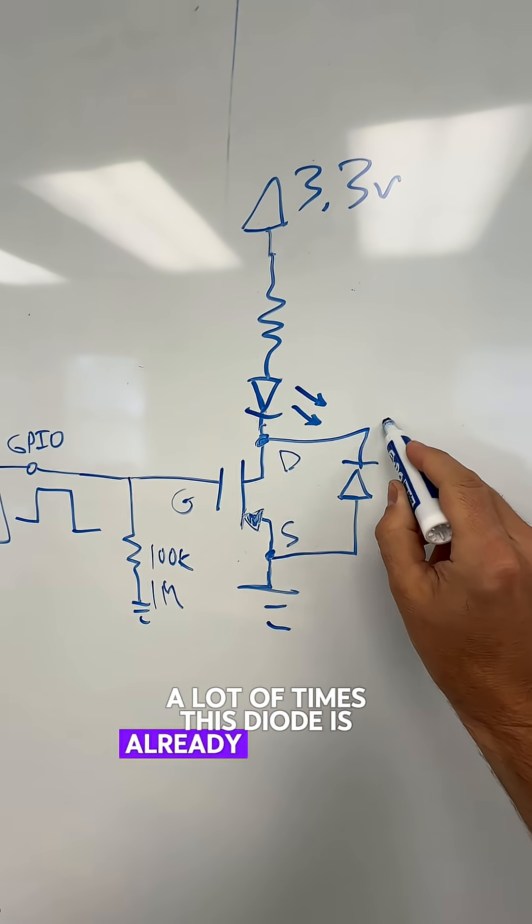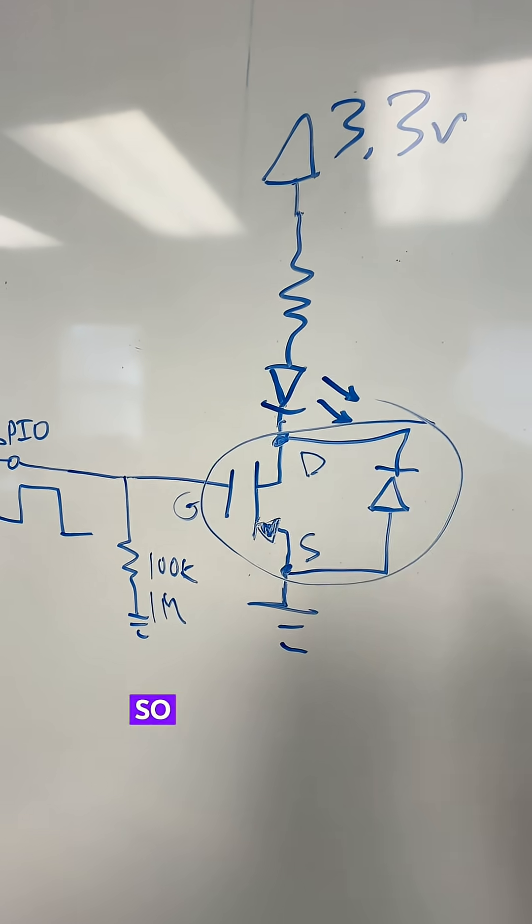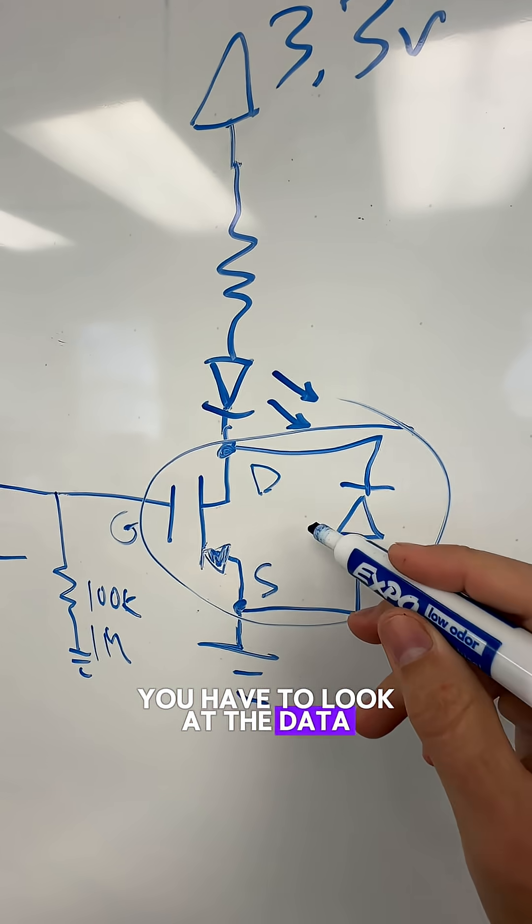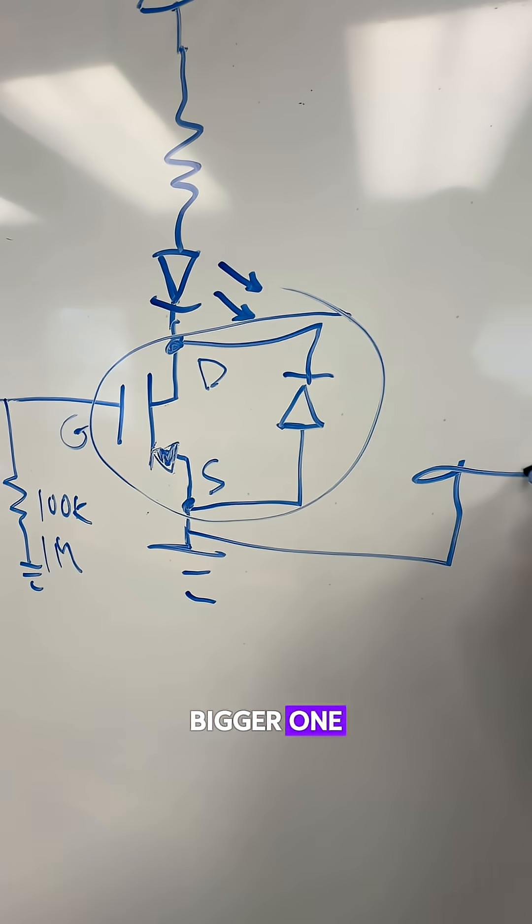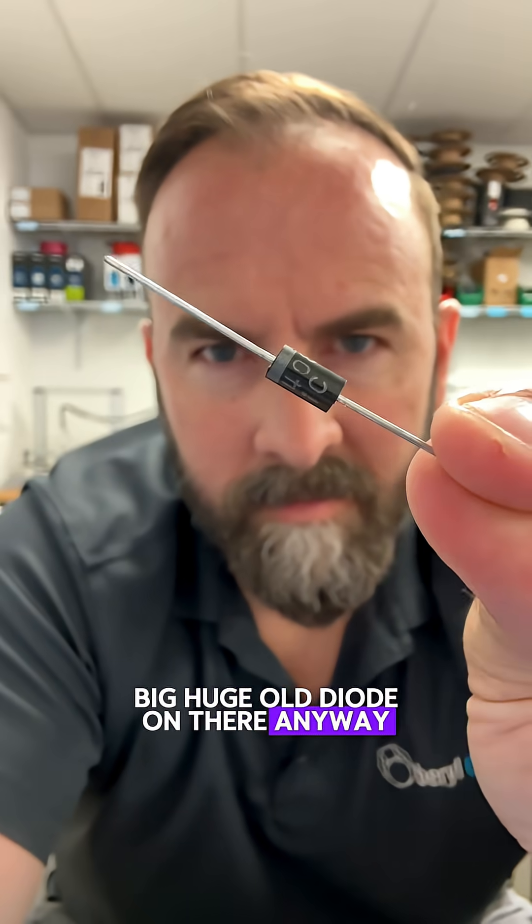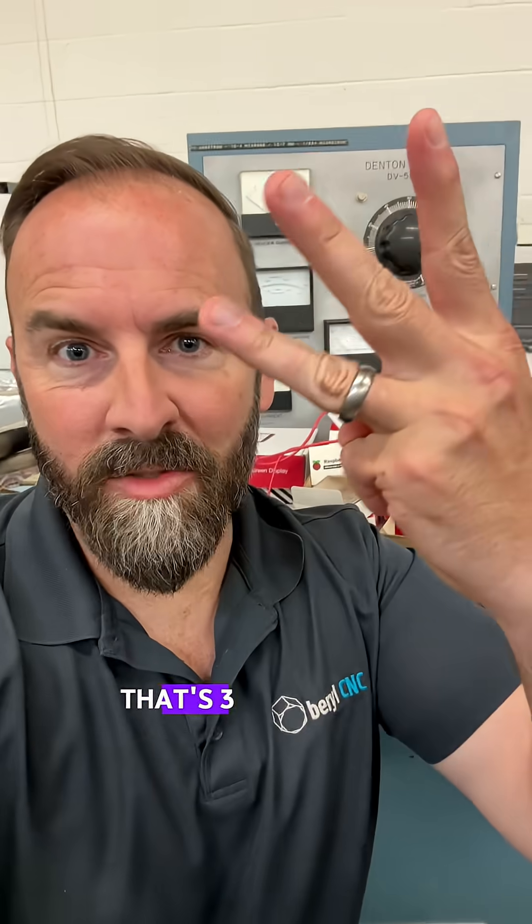The way they usually do this is there's just simply a diode here that goes up like that. A lot of times this diode is already integrated into the FET itself, so you'll see that in the symbol. You have to look at the datasheet to know if it's there or not. And sometimes it makes sense to just put a bigger one, big huge old diode on there anyway to protect it even more.